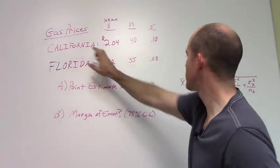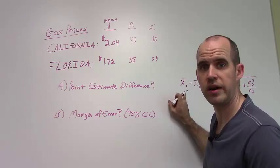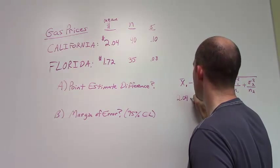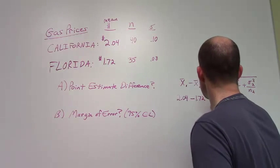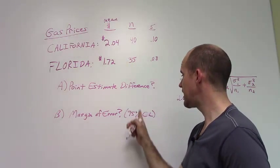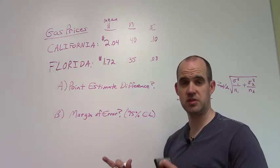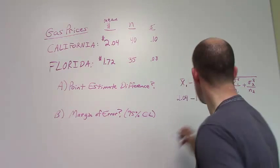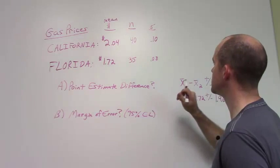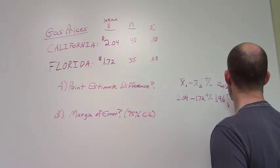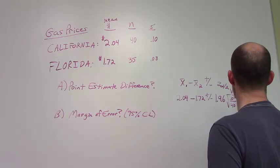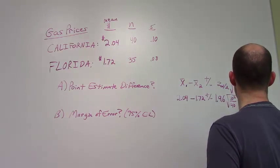Now, we'll use California as our sample 1 and Florida as sample 2. So what that looks like is saying 2.04 minus 1.72, plus or minus Z alpha divided by 2 at a 95% confidence level, this is going to be 1.96. And then let's put in our standard error. So we've got the standard error for California, 0.10 squared divided by 40 plus 0.08 squared divided by 35.